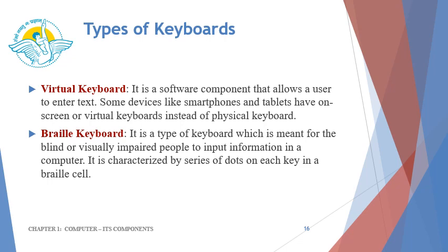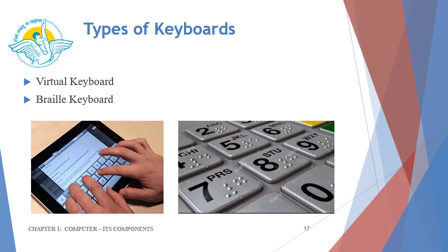The third type is the virtual keyboard. It is a software component that allows a user to enter text. Some devices like smartphones and tablets have on-screen or virtual keyboards instead of a physical keyboard. The fourth type is the Braille keyboard. It is a type of keyboard meant for blind or visually impaired people to input information into a computer. It is characterized by a series of dots on each key in a Braille cell. On this slide you can see the picture of a virtual keyboard and a Braille keyboard.